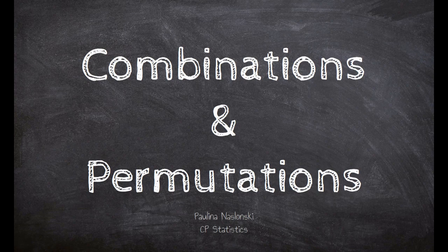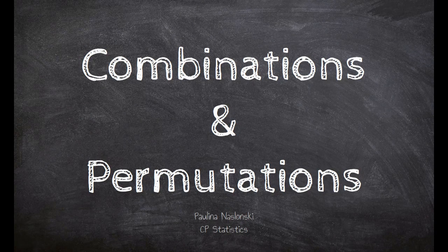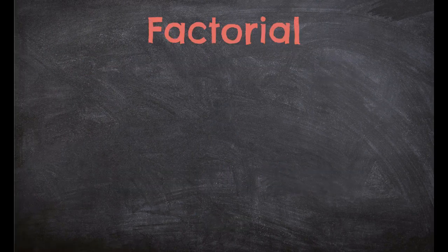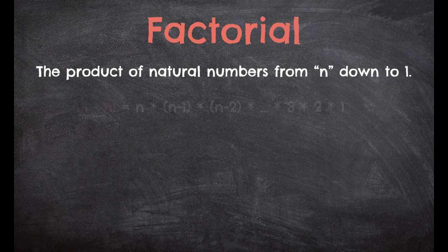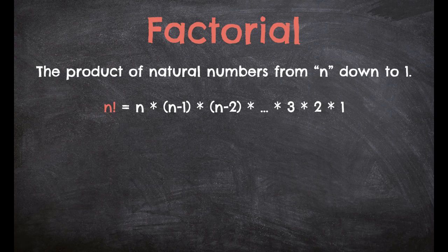Hi everybody. Today's topic is going to be on combinations and permutations, but before we get into those, we actually have to know what a factorial is. A factorial is the product of natural numbers from n all the way down to 1, so a product meaning we're going to be multiplying numbers. This is the fancy formula for it, but we can either do this by hand or using a calculator, and I'll show you both ways.